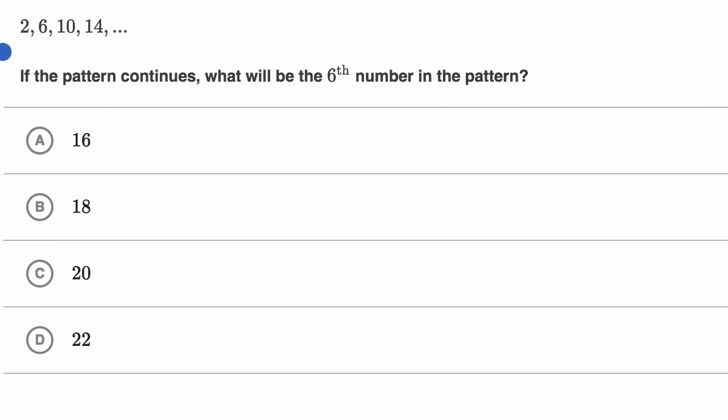All right, so first let's figure out the pattern. To go from two to six, it looks like we added four, then we are adding four again to go from six to 10, then we're adding four again to go from 10 to 14, so it seems like we're adding four every time.